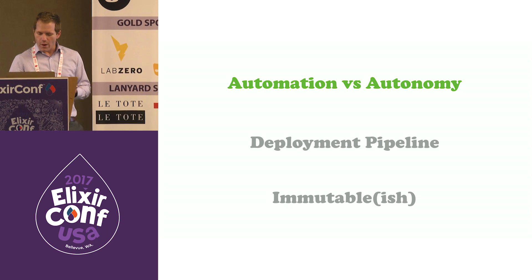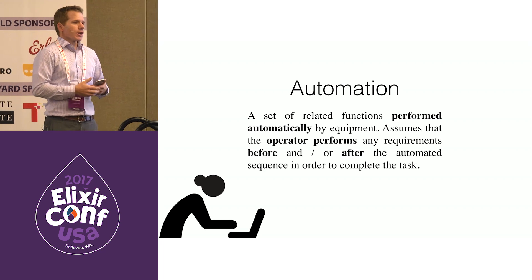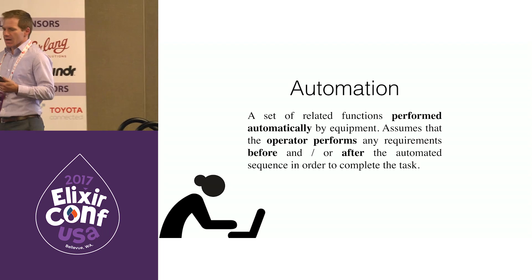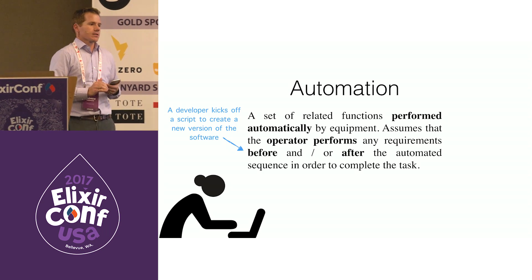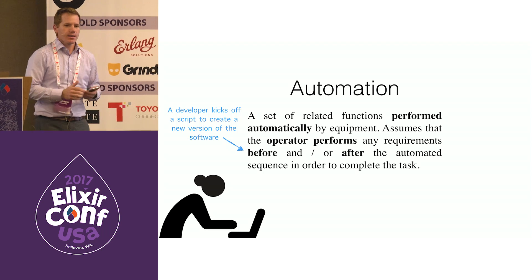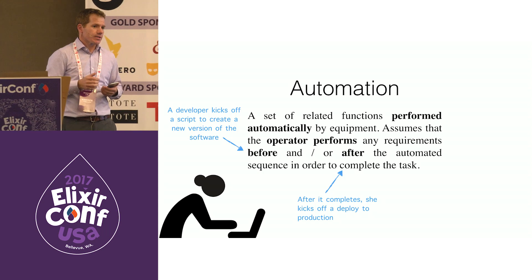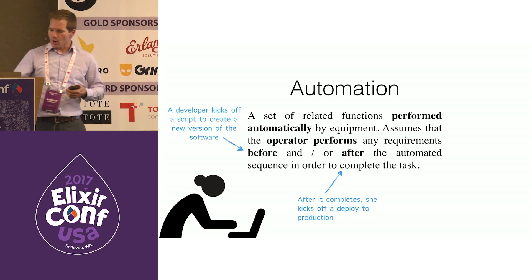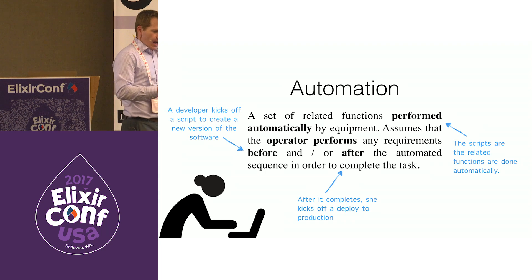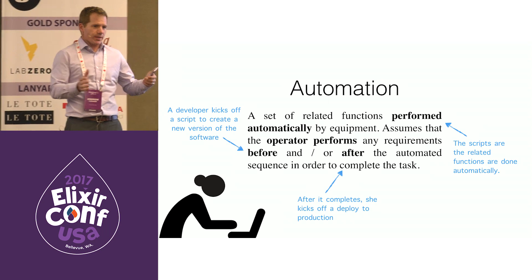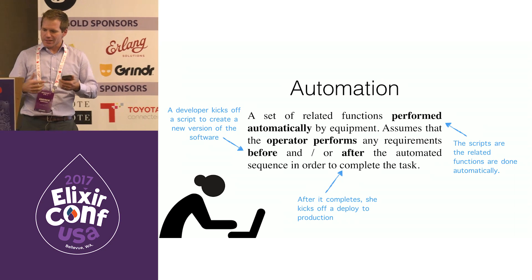Picture a developer who's ready to cut a release. They send a Slack command to their build server: 'go build me a release.' Then they come back from their coffee break, check, and then deploy it to their EC2 instances, and it goes live. They check and do some tests. Those little bits of functionality grouped together as one coherent step — that is your automation. That's where you're writing these things to do stuff for you.